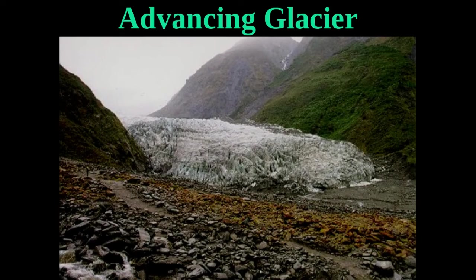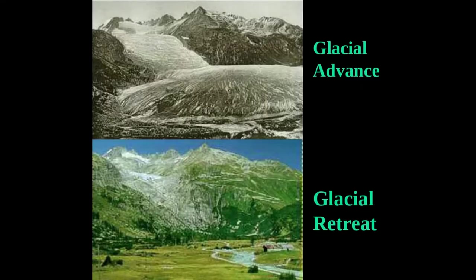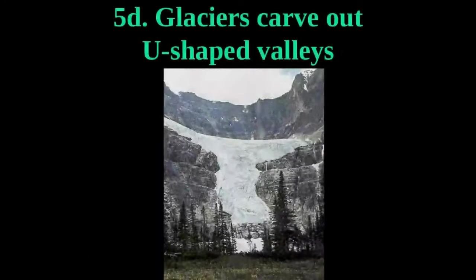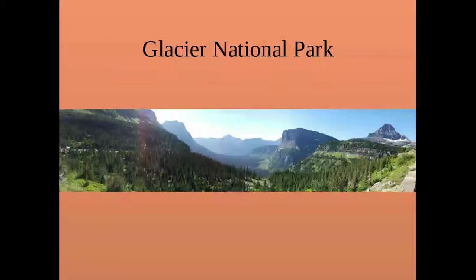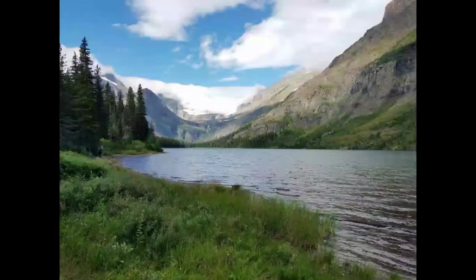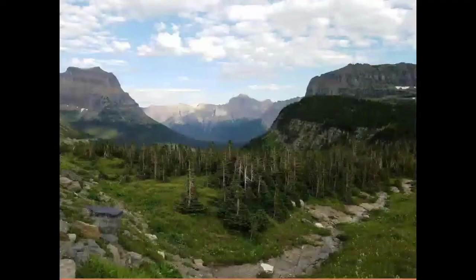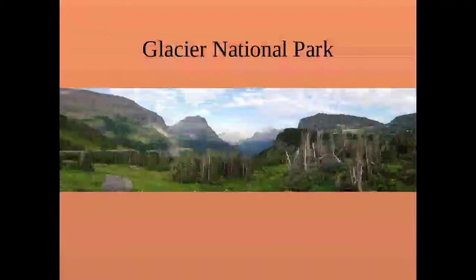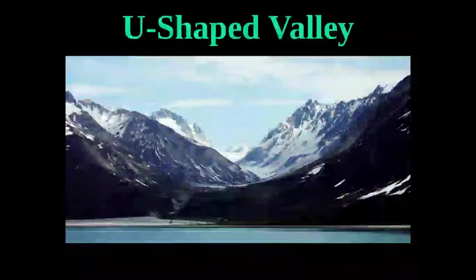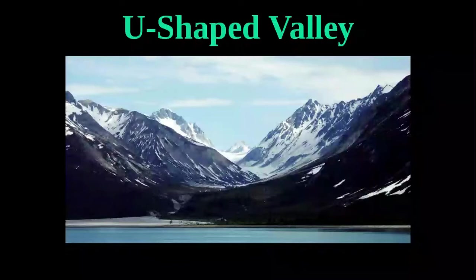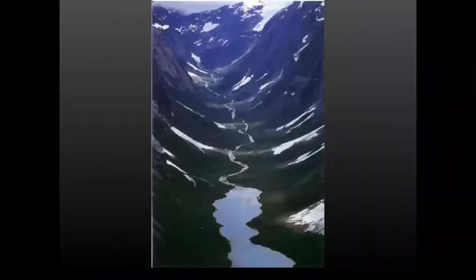Glaciers carve out U-shaped valleys — also called cirques. Rivers carve V-shaped valleys; glaciers carve U-shaped valleys. You can see beautiful U-shaped valleys in Glacier National Park, Montana. The meltwater from a glacier can create lakes and hanging valleys. You can see U-shaped valleys throughout Glacier National Park — absolutely beautiful and worth visiting.